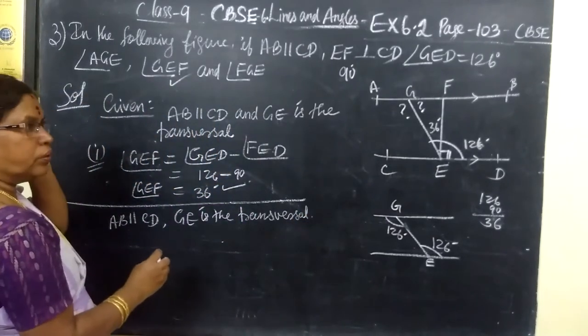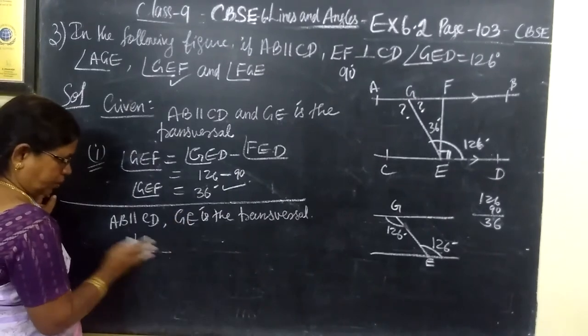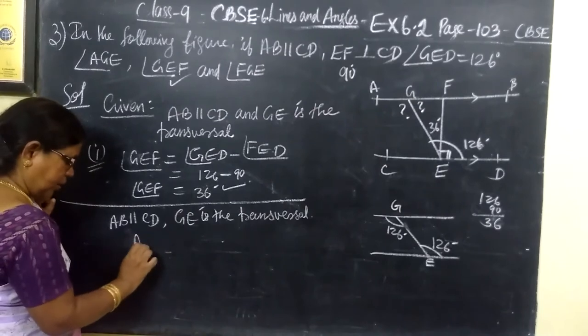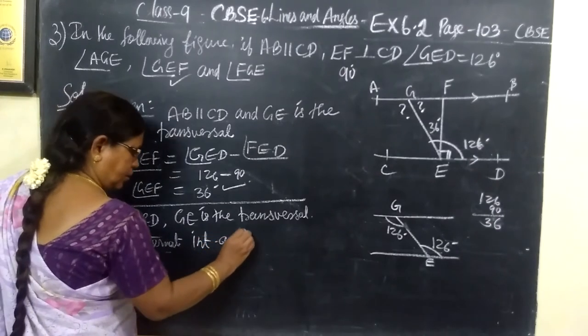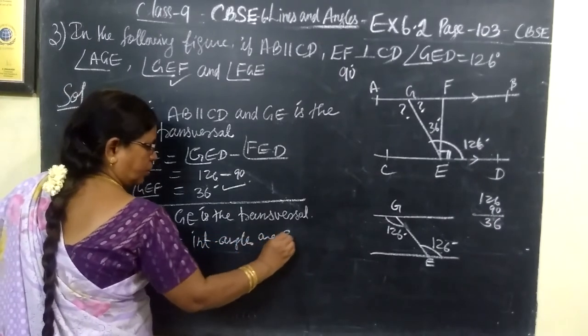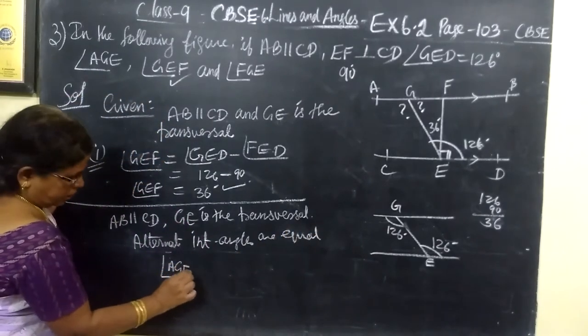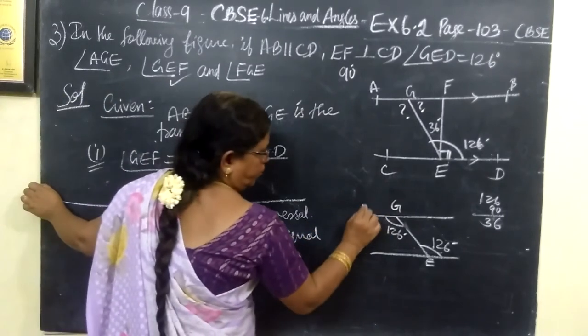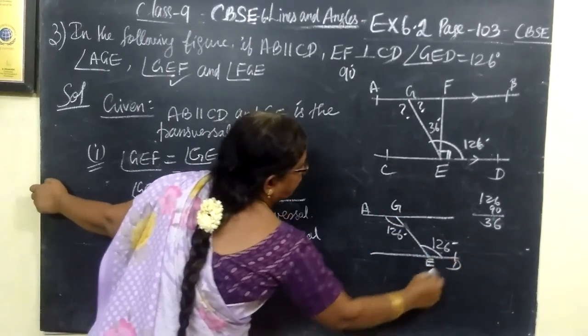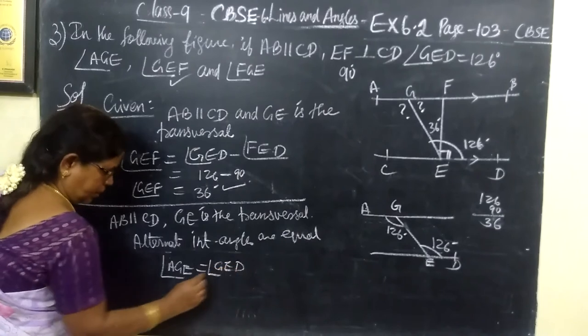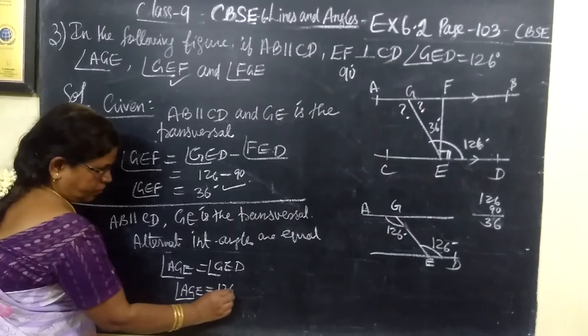Therefore, alternate interior angles are equal. Therefore, AGE equal to—if you draw separately, you find it easy—AGE equal to GED. So therefore, AGE equal to what is GED? 126 degrees. Over. So second part, over.